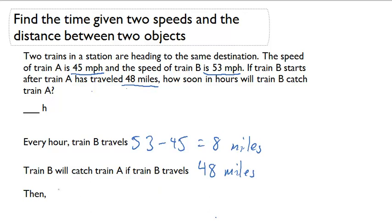At that rate, we know that 48 divided by 8 is going to give us 6 hours. So at these speeds and the initial distance between them, it's going to take 6 hours for train B to catch train A.